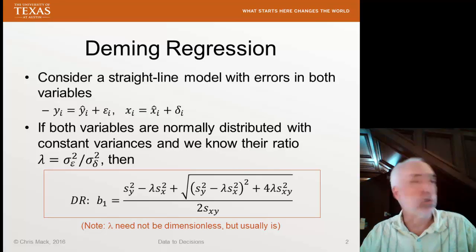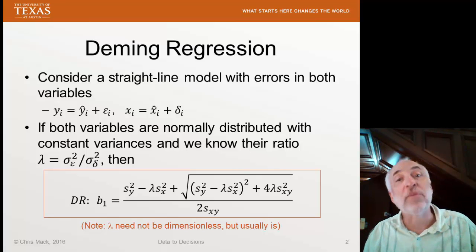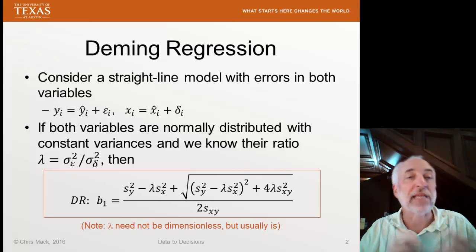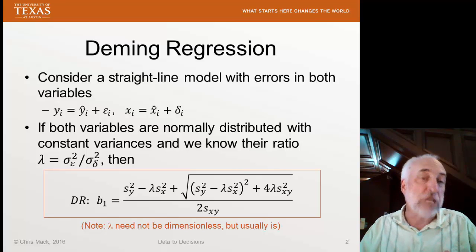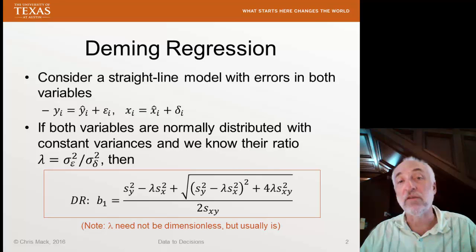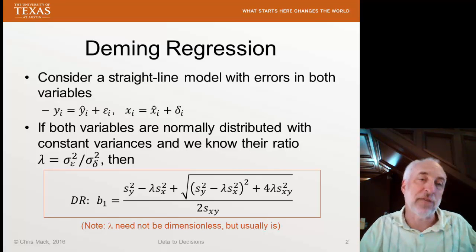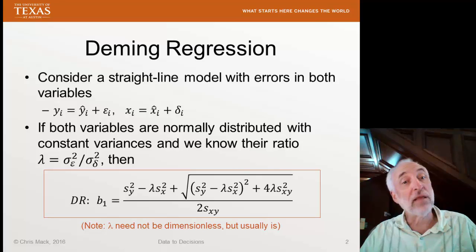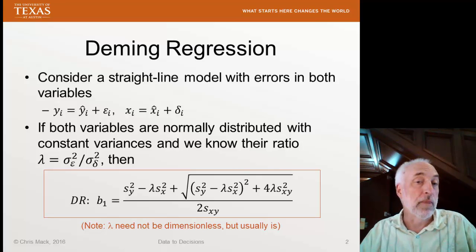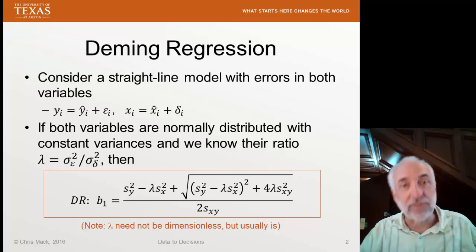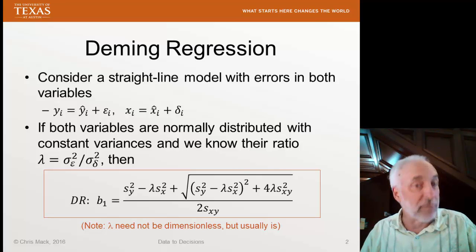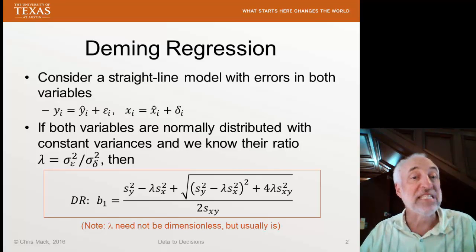Sometimes we do a calibration where we measure the same thing in two different ways. One measurement is a highly precise technique — our standard, the best way of making the measurement. On the other axis, we make that same measurement with a simpler, cheaper, or faster method. Maybe one is a laboratory measurement and the other a field measurement — quick and dirty. The uncertainty in the measurements can be very different, so lambda might be a number different from one.